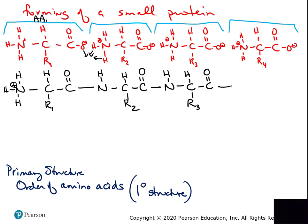The fourth amino acid completes the chain. At the nitrogen end, the nitrogen has hydrogens; at the carbon end, both oxygens remain since it's not connected to anything else. This direction matters — one end is called the nitrogen end (N-terminus) and the other is the carbon end (C-terminus). This specific order of amino acids linked together in the long chain is called the primary structure.